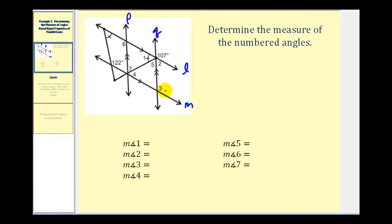Taking a look at angle three and the angle that measures 107 degrees, these two are corresponding angles to line L and line M and therefore they're congruent. So the measure of angle three would be 107 degrees.